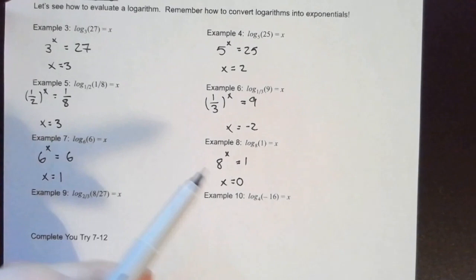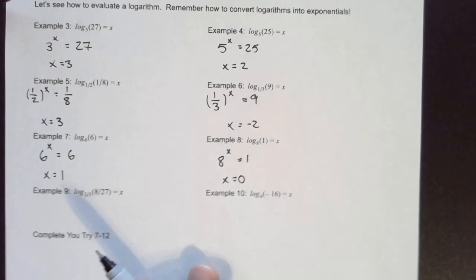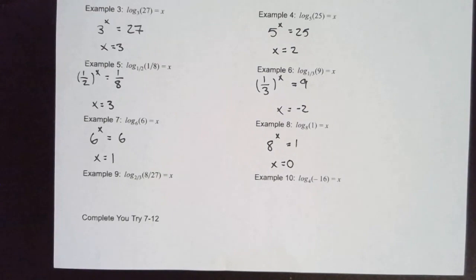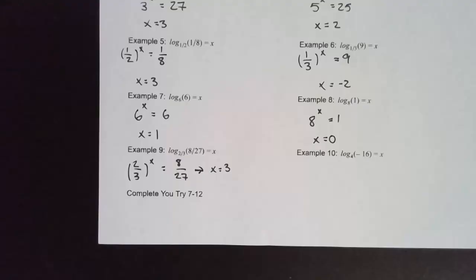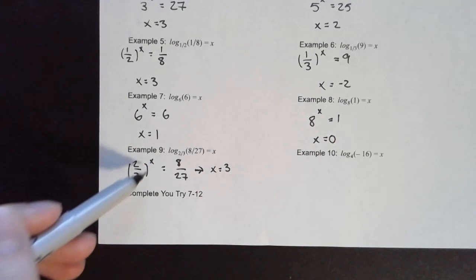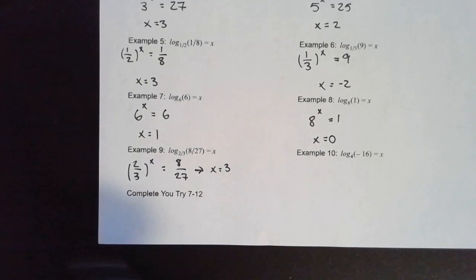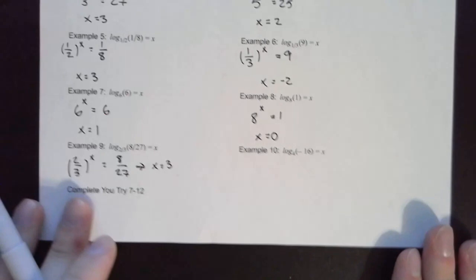For example 8: 8 to what power equals 1? Anything to the zero power equals 1, so the exponent is 0. For example 9, we need 2 to what power equals 8 and also 3 to what power equals 27 — this should work for both. X equals 3 in that case: 2 to the third power equals 8 and 3 to the third power equals 27.